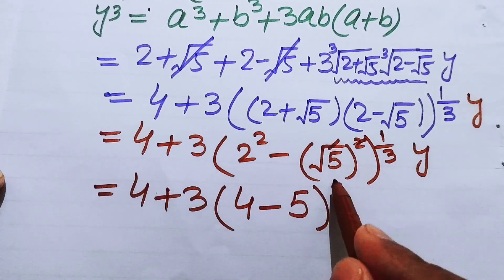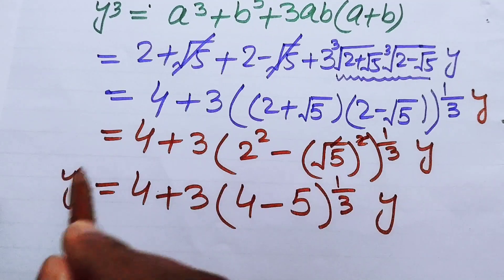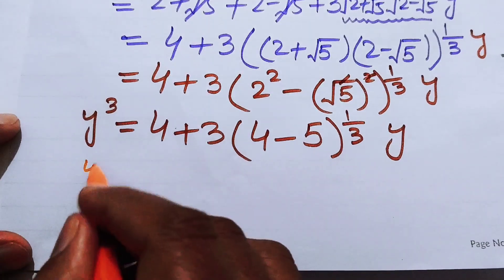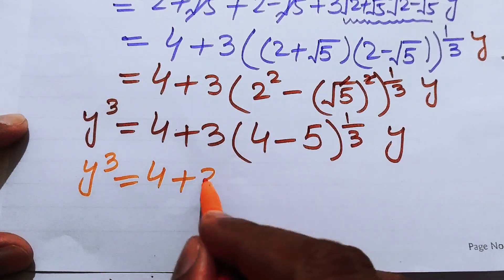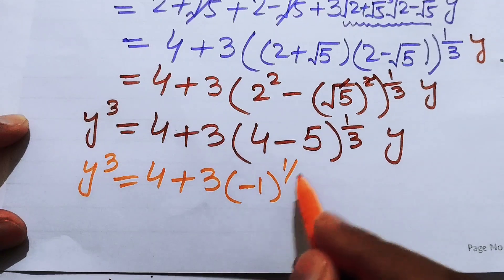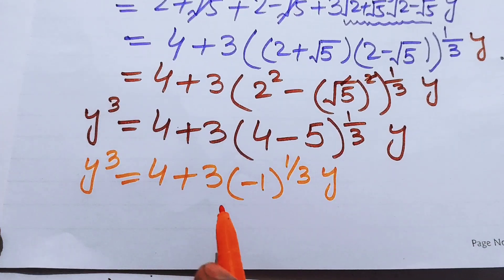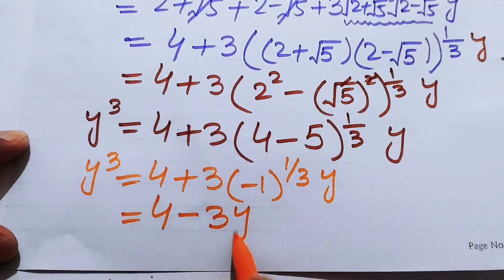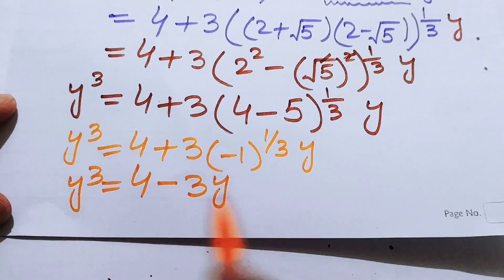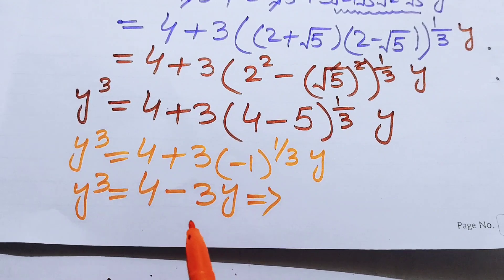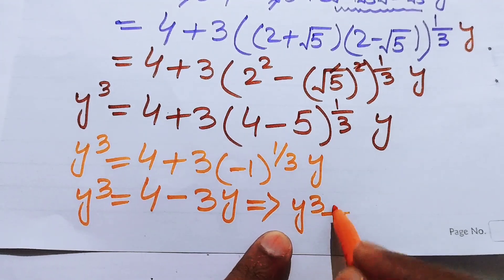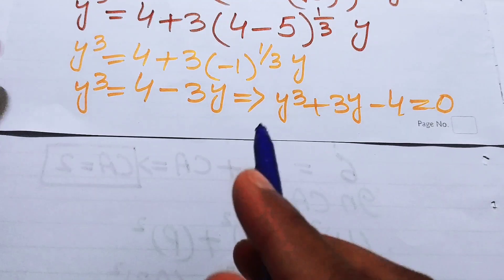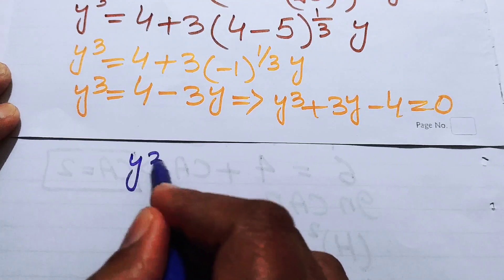That gives 4 minus 5 equals negative 1, raised to the power one-third, times y. Since the cube root of negative 1 equals negative 1, the equation becomes y cubed equals 4 minus 3y. Rearranging all terms to one side gives the cubic equation y cubed plus 3y minus 4 equals zero.